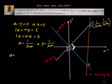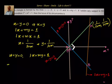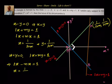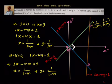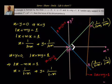Now similarly let us find the coordinates of B. We take x plus y equal to 0 and lx plus my equal to 1. Since x plus y equal to 0 gives x equal to minus y, we substitute: lx minus mx equal to 1, so x equal to 1 by l minus m, and y equal to minus 1 by l minus m. So the coordinates of B are 1 by l minus m comma minus 1 by l minus m.